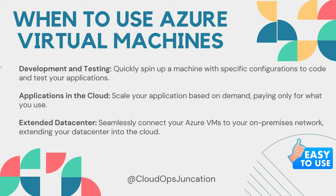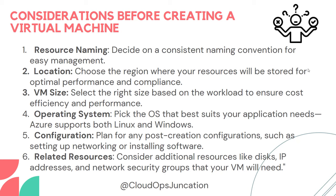Third use case is extending your data center — seamlessly connect Azure virtual machines to your on-premises network. The VM network can be easily connected to your organization's on-prem data center via ExpressRoute and other methods. This is useful when some servers cannot be moved to Azure or need to stay on-premises for security purposes, but you still want to connect and utilize them.